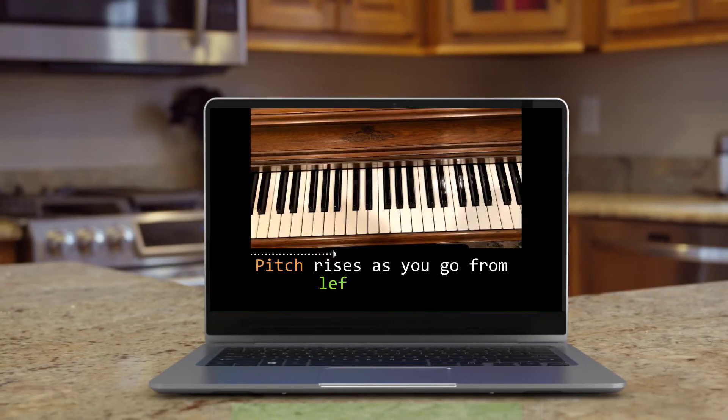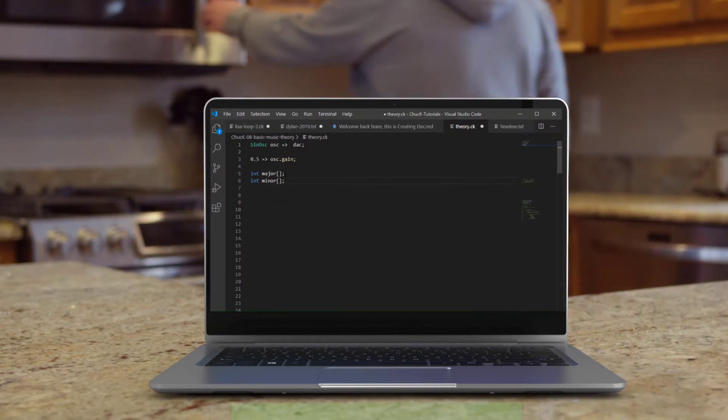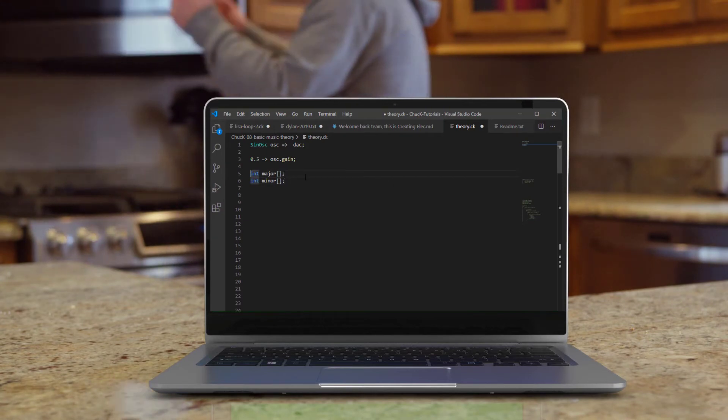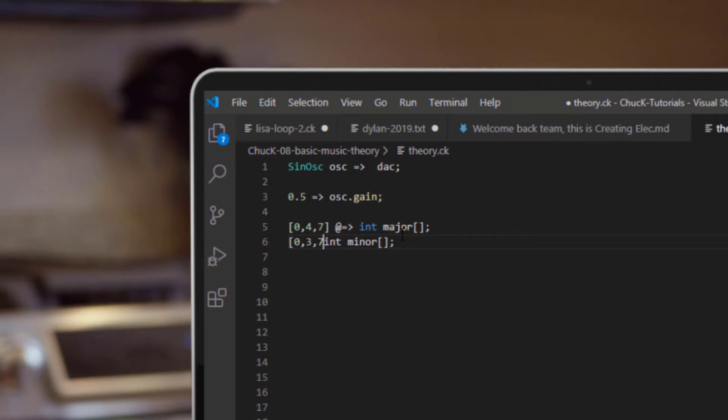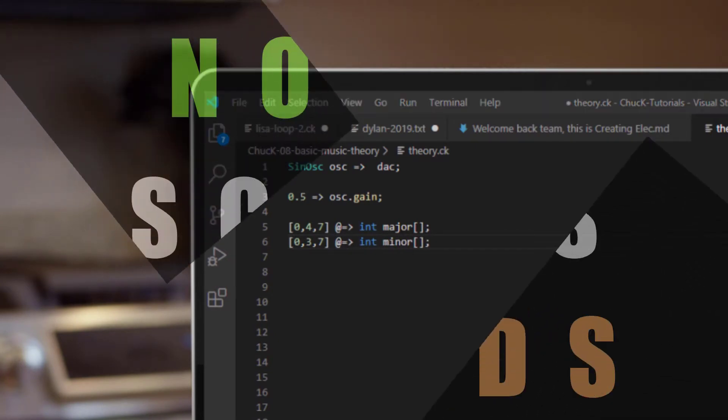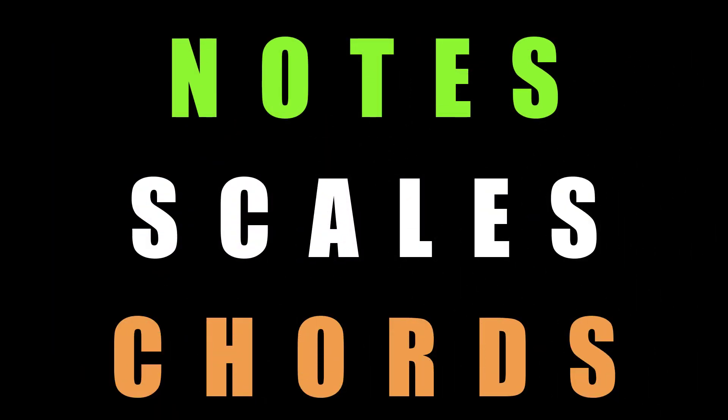In our eighth video, we went over how to stick what we called major and minor chords into our Chuck music. What we did not do is discuss what those terms mean or why an array of 047 is major while an array of 037 is minor. So today we're going to unpack that a little bit and explore the basics of notes, scales and chords.